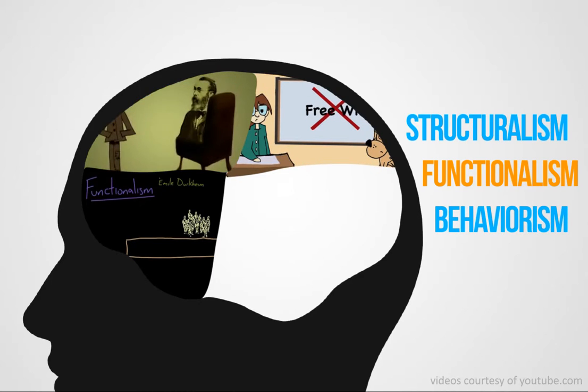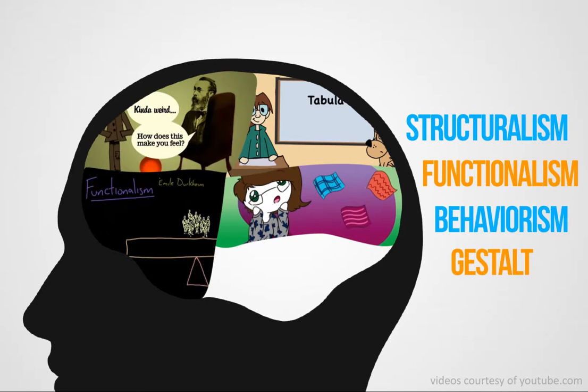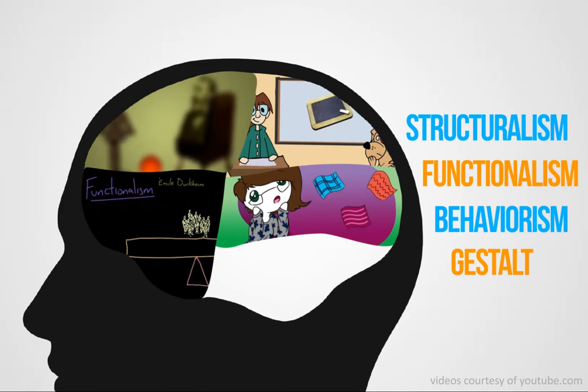No free will. Our surroundings and environment determine our behavior. When we are born, our mind is a blank slate. We perceive certain patterns, and why we don't perceive other certain patterns.